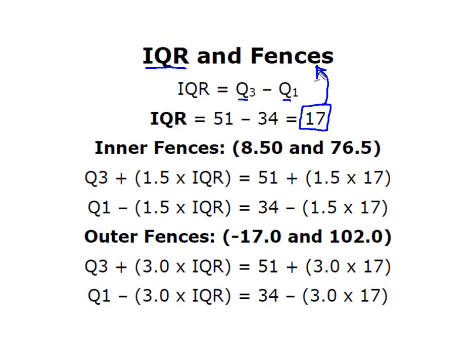We're going to use those inner and outer fences to determine whether or not our data has any outliers. The formula for the inner fences is start at Q3 and move to the right one and a half times the IQR. And for the lower inner fence, start at Q1 and move to the left by subtracting that same one and a half times the IQR.